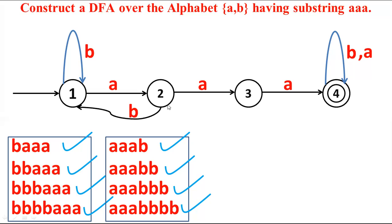At state number three we have defined 'a' but not 'b'. Consider the string 'aab aaa' — it should be accepted because 'aaa' is present. So we need to design the transitions accordingly. After considering these cases, for state number three we have defined both 'a' and 'b'. At state four, all inputs 'a' and 'b' are defined. So this is the complete DFA having 'aaa' as a substring.